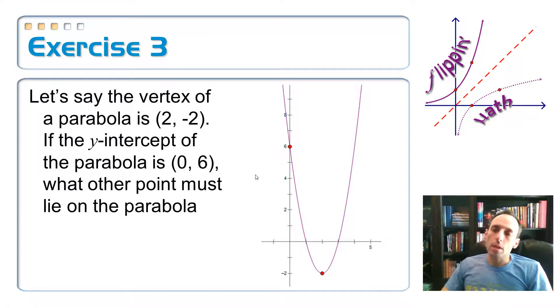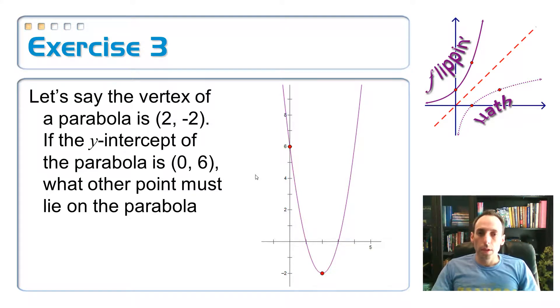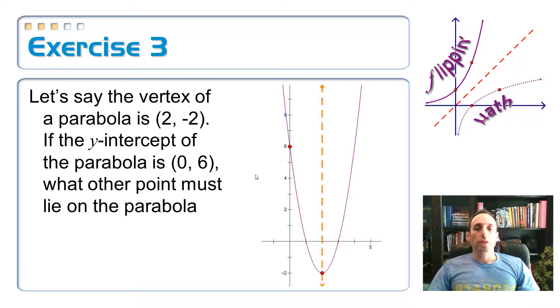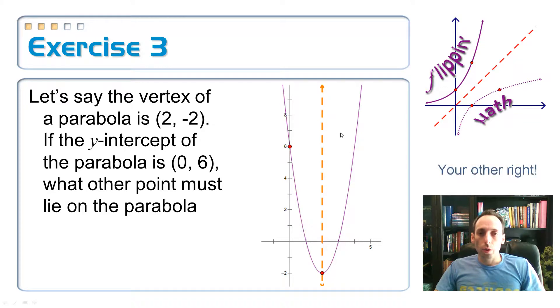Next question. Let's say that the vertex of a parabola is 2 comma negative 2, just like you can see in the picture there. If the y-intercept of the parabola is at 0 comma 6, what other point has to lie on your graph? Well, as we were talking about, if we just throw ourselves in an axis of symmetry and just count over, this is one, two over on the left and one, two spaces on the right.